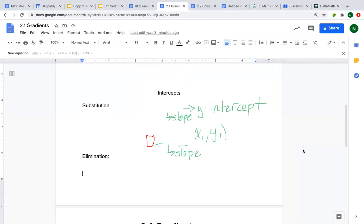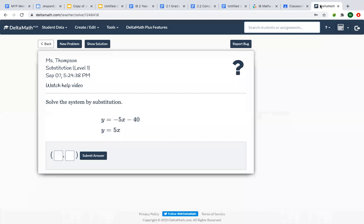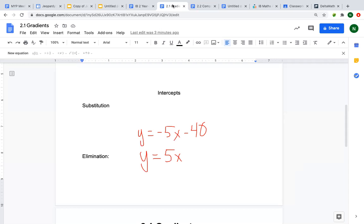So within talking about intercepts, I'm just going to do a quick review of systems of equations as well. So we have substitution. Now substitution works. Let's pull up a problem. So substitution, you have y equals negative 5x minus 40 and y equals 5x. So when we are talking about substitution, the times that this works best is when you have a variable solved for, the same variable solved for in both equations.